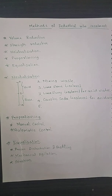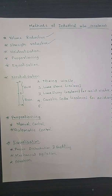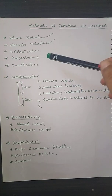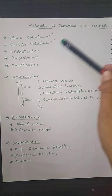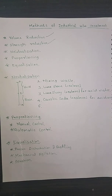In the previous class we were discussing the different methods of industrial wastewater treatment. We covered volume reduction and strength reduction. Now in today's class we are going to discuss how industrial wastewater can be treated using neutralization, proportioning, and equalization. We will also study how inorganic solids in industrial wastewater can be removed.